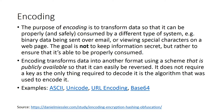Anyways, first slide: encoding. One thing I want to be very clear about at the start of this is the language. When people are talking about encoding or encryption, these words are not interchangeable. To the untrained eye, someone who just hears these words casually thrown around might think they're the same thing, but in fact they're quite different. The purpose of encoding is to transform data so that it can be easily, properly, and safely consumed by a different type of system. An example would be binary data being sent over email or viewing special characters on a web page. The goal isn't to keep this information secret, but rather to ensure it's able to be properly consumed. Encoding transforms data into another format using a scheme that is publicly available so it can be easily reversed. It doesn't require a key — the only thing required to decode it is the algorithm used to encode it. Examples include ASCII, Unicode, URL encoding, and Base64.